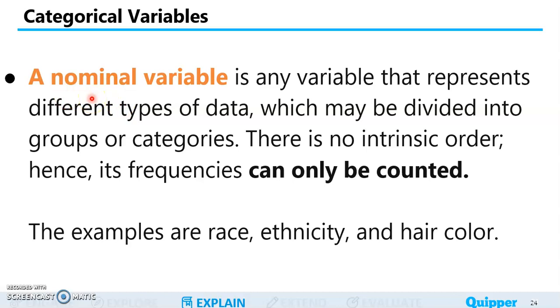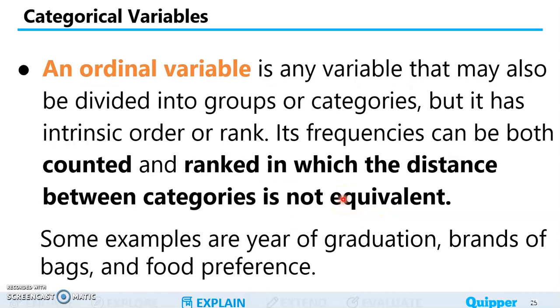We can only count them. Examples are race, ethnicity, and hair color. So we say who among the class or the students have black hair, so you count them, so 10. Those with brown hair, so that's it. So frequencies, they are counted. Names, nominal variable.